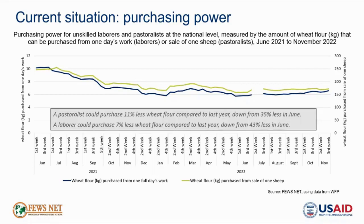Purchasing power for pastoralists has remained generally stable, with declining wheat flour prices being counteracted by declining sheep prices. In November 2022, a pastoralist could purchase 11% less wheat flour compared to the same time last year, and a laborer could purchase 7% less. Again, this represents a closing gap compared to June 2022, but purchasing power was already significantly below average in November of last year, which is the point of comparison.